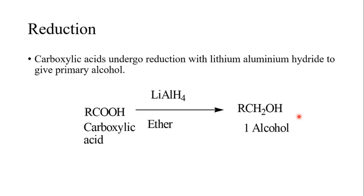The fifth reaction is the reduction reaction. Carboxylic acid undergoes reaction with lithium aluminum hydride to give the primary alcohol. Carboxylic acid reacts with lithium aluminum hydride in ether solvent, and we get one mole of primary alcohol as the product.